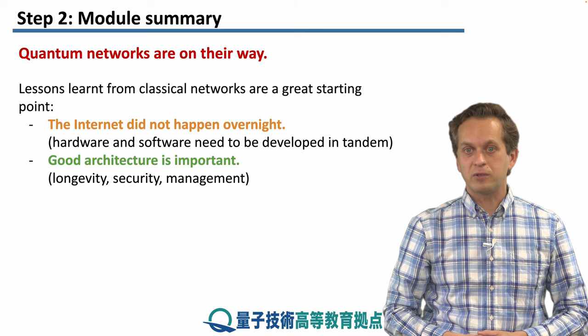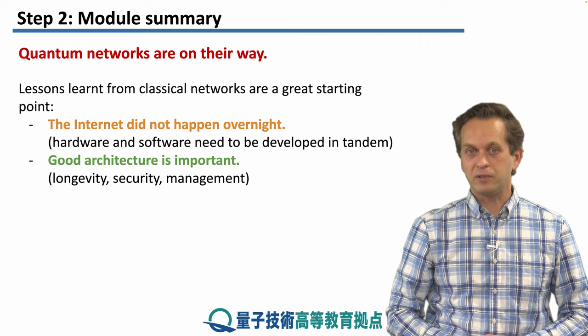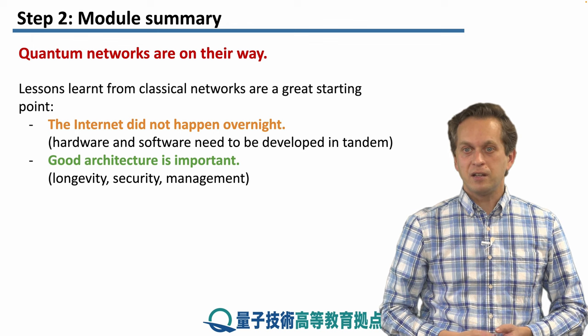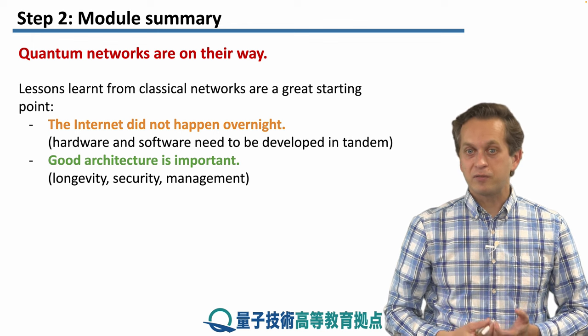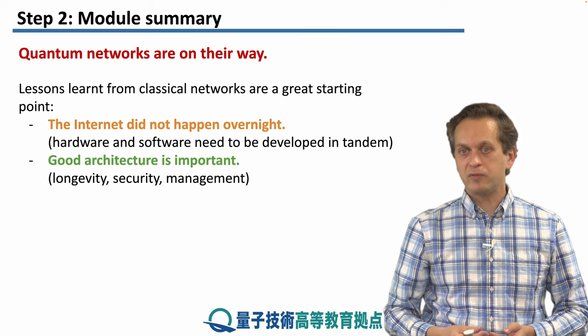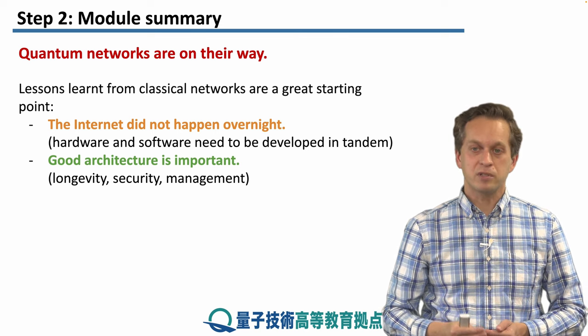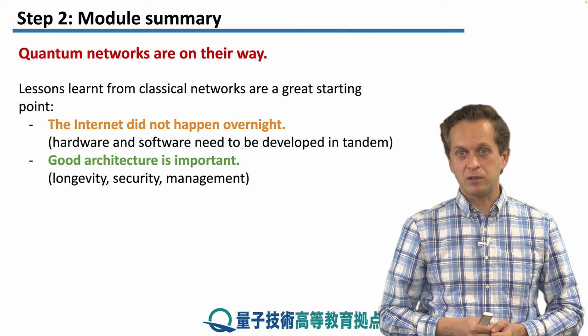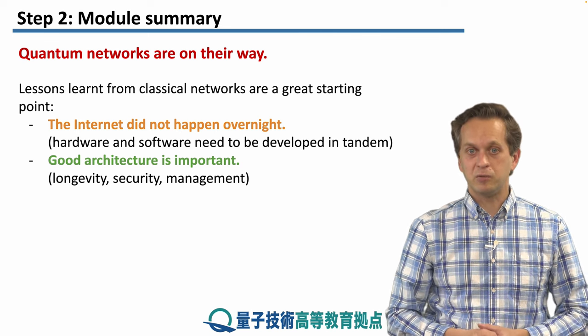Lessons learned from classical networks are a great starting point. The internet did not happen overnight. As the hardware develops for quantum networks, so must the software. At some point for classical internet, the hardware was sufficient enough that really it was the software that determined the quality of the networks and of the internet.